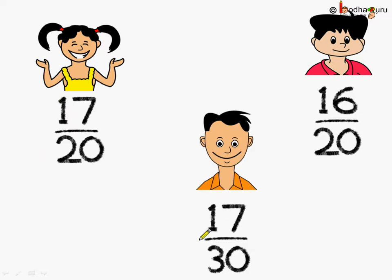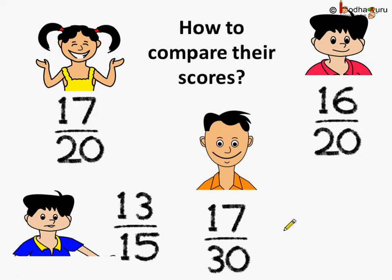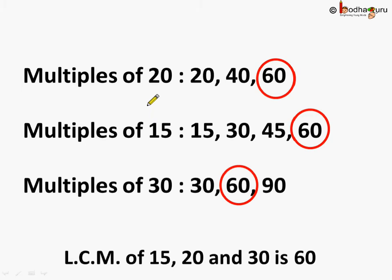Now there is another student, Rajat. Rajat scored 13 out of 15. So out of these four children, who performed better, or whose score was best? Let's try to find this by making the denominators the same for all these fractions. The multiples of 20 are 20, 40, 60. The multiples of 15 are 15, 30, 45, 60. And the multiples of 30 are 30, 60, 90. So the LCM of 15, 20, and 30 is 60.